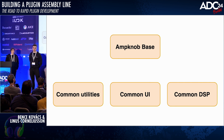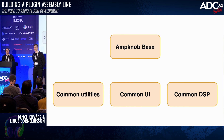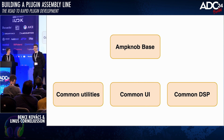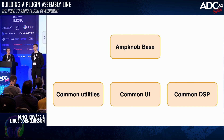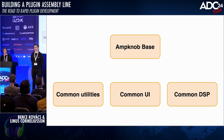One challenge we found when working with Git submodules was that when we have a new version of some module and want to update it in all the plugin repositories, we have to check out all different plugin repos and update to the latest version. That can be tedious, so we tried to automate it by creating a shell script that basically checks out the repositories of our choice, selects which modules we want to update, and then creates a pull request with the latest submodule version.